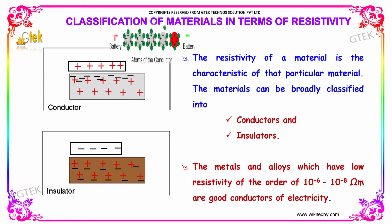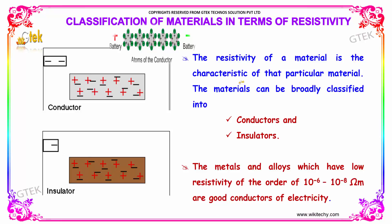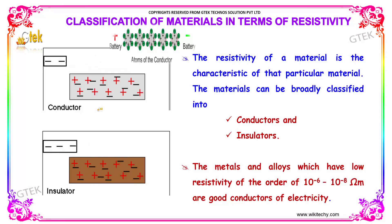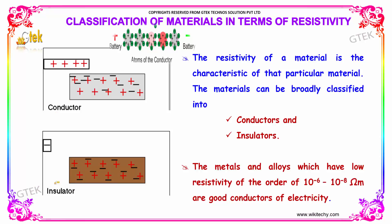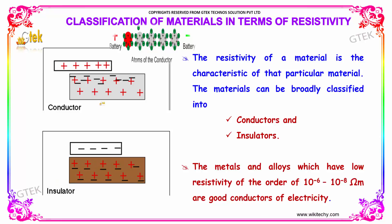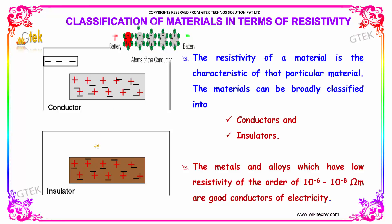Now, we will talk about the classification of materials in terms of resistance. The resistivity of a material is a characteristic of that particular material. Materials are classified as conductors and insulators. A conductor is the one which will conduct electricity, while an insulator is the one which will not conduct electricity.